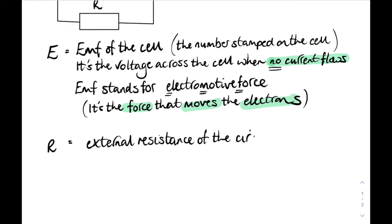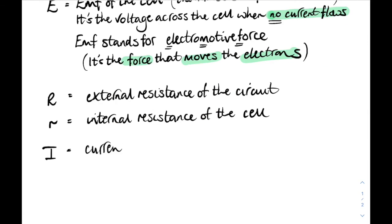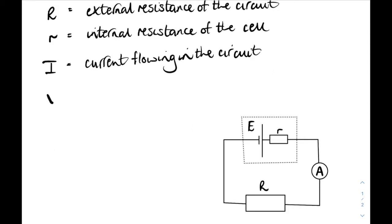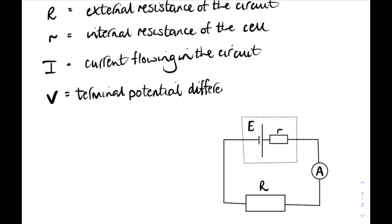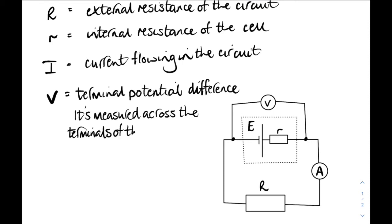R is the external resistance of the circuit, small r is the internal resistance of the cell, and I is the current flowing in the circuit measured on an ammeter. The voltage V measured across the terminals of the battery - the useful output voltage - is called the terminal potential difference, usually abbreviated TPD. It's measured across the terminals of the cell by a voltmeter and gives the useful output voltage.